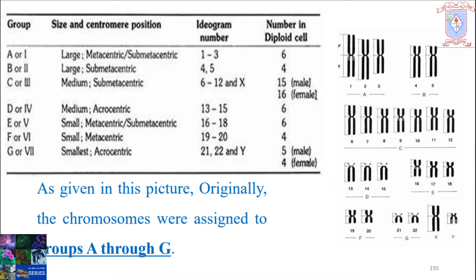As given in this picture, originally the chromosomes were assigned to groups A through G. Here you can see Groups A, B, C, D, E, F, and G, or it is also named as Group 1, Group 2, Group 3, Group 4, Group 5, Group 6, and Group 7. They are classified according to their size and centromere position.